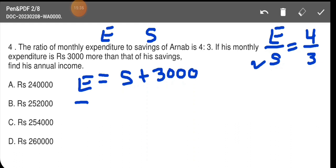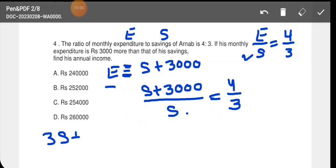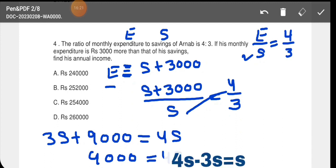Now, putting E value in this equation, S plus 3000 divided by S is equal to 4 by 3. We solve this by cross multiplication. 3 comes here and S goes there. Multiplying 3 with S, 3S plus 9000 is equal to, this S goes here, 4S. Now, S value will be, taking 3S to opposite side, 9000 is equal to 4S minus 3S equals S. So saving value we found out, saving is 9000. So expenditure is 3000 more, means 12,000. We found saving and expenditure.